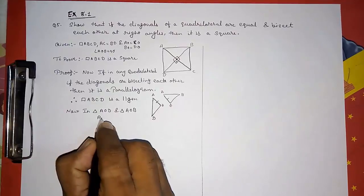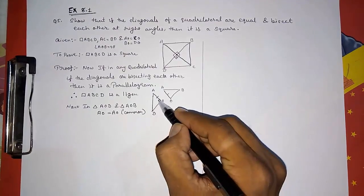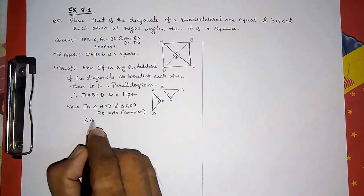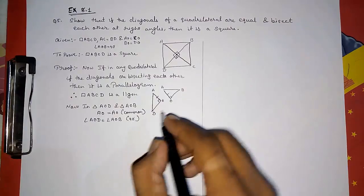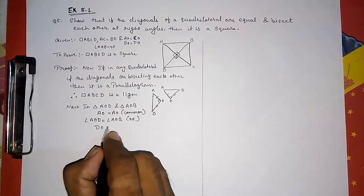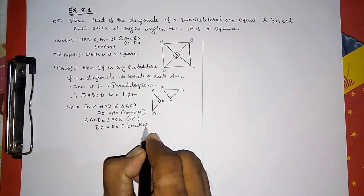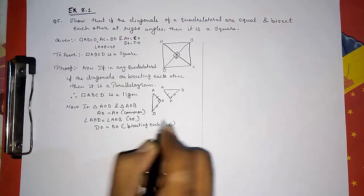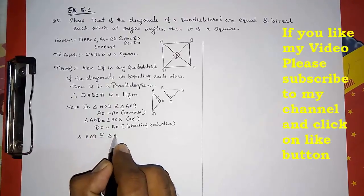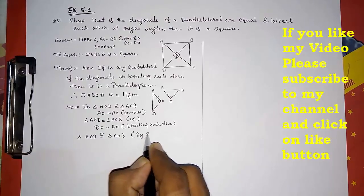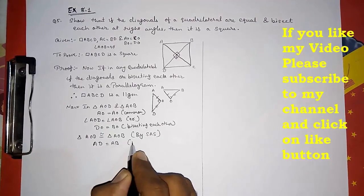First, AO equals AO — common side. Second, angle AOD equals angle AOB — both are 90 degrees, as given. Third, DO equals BO — because the diagonals bisect each other. So by the Side-Angle-Side (SAS) rule, triangle AOD is congruent to triangle AOB. Therefore, AD equals AB by CPCT.